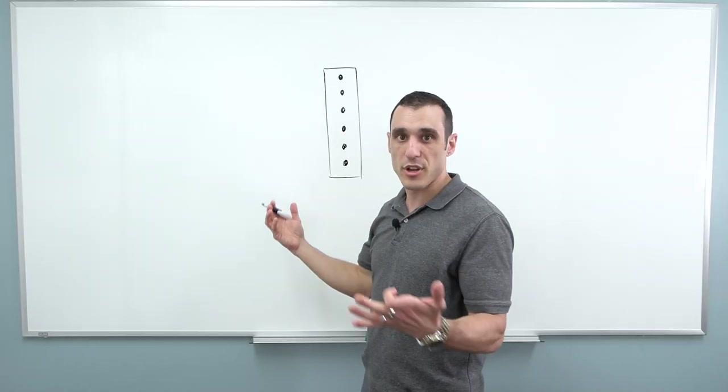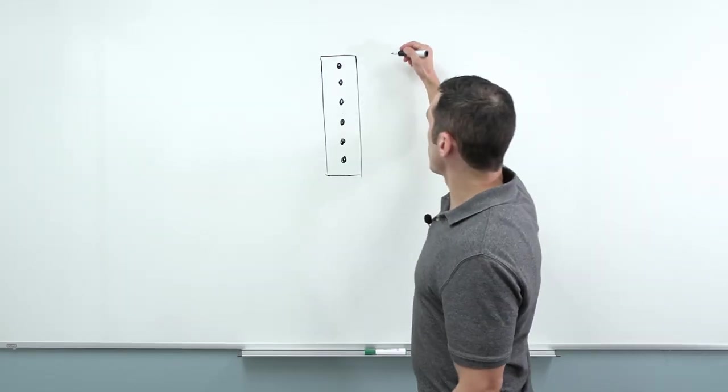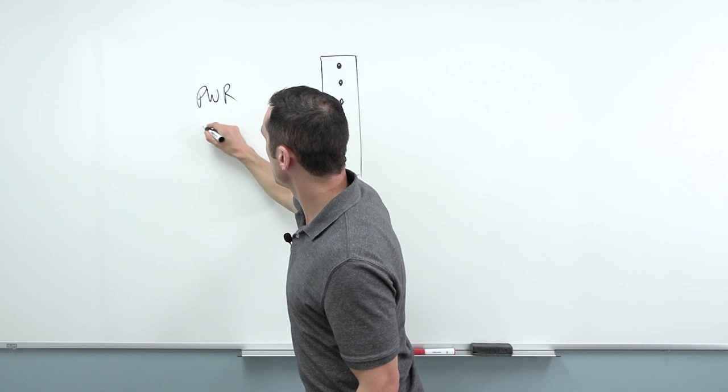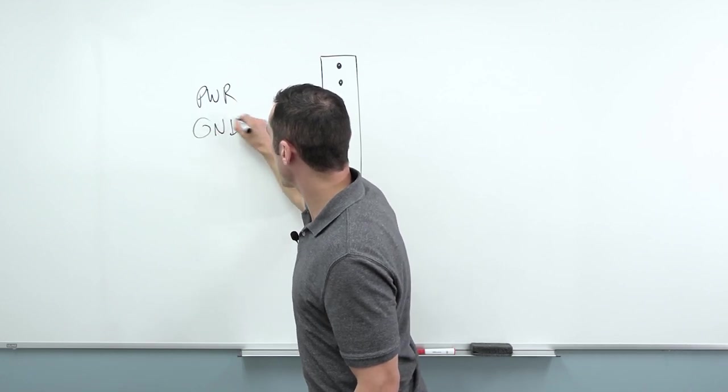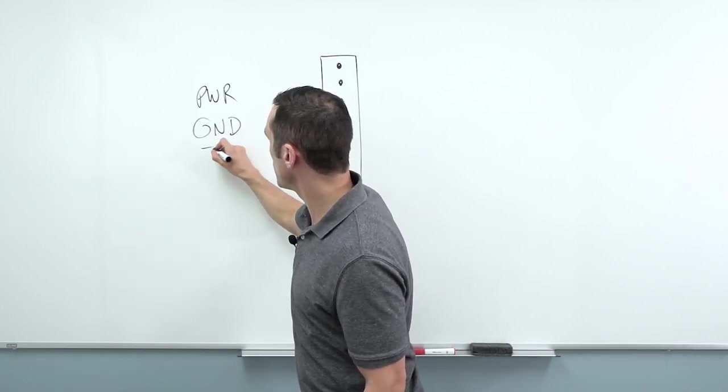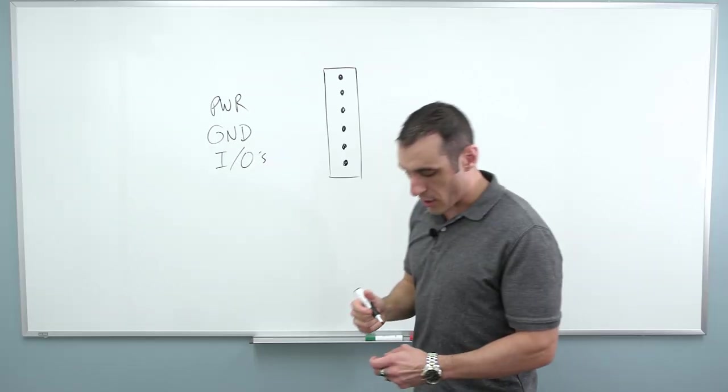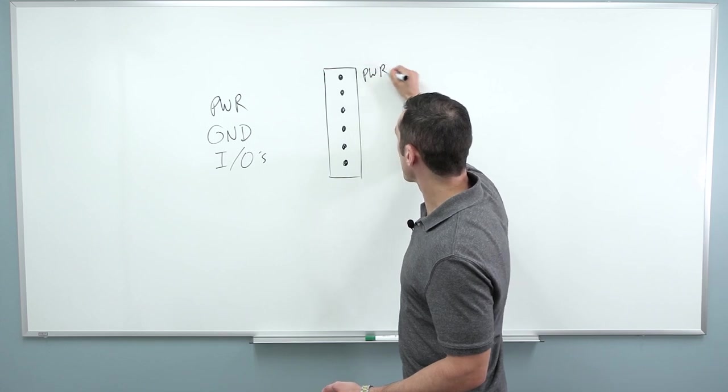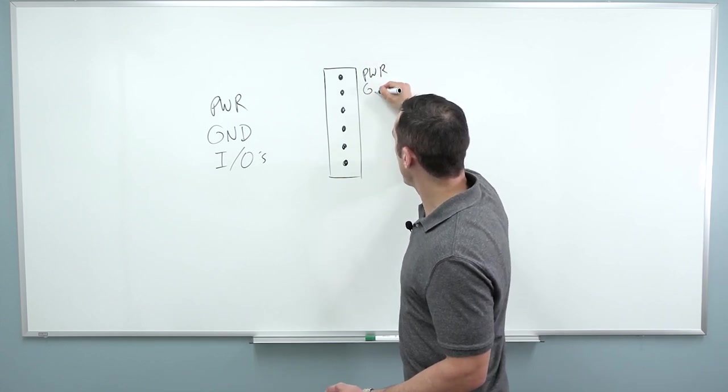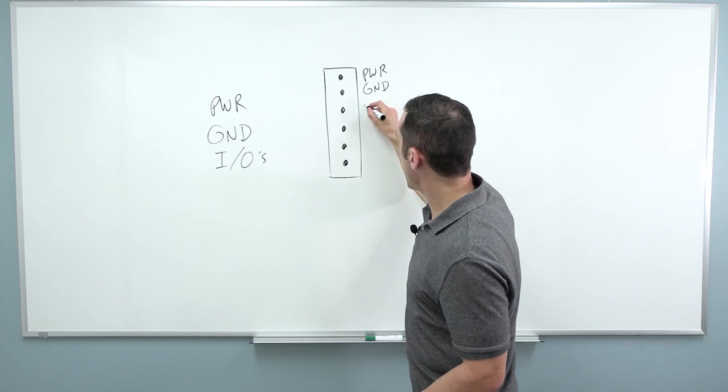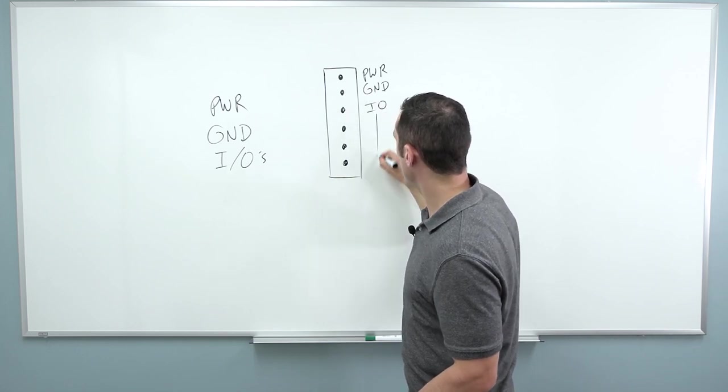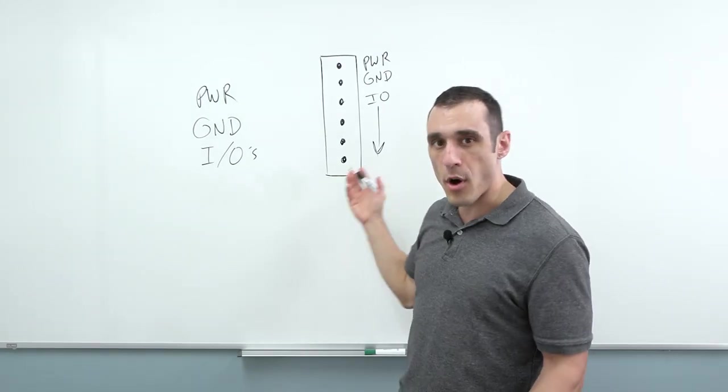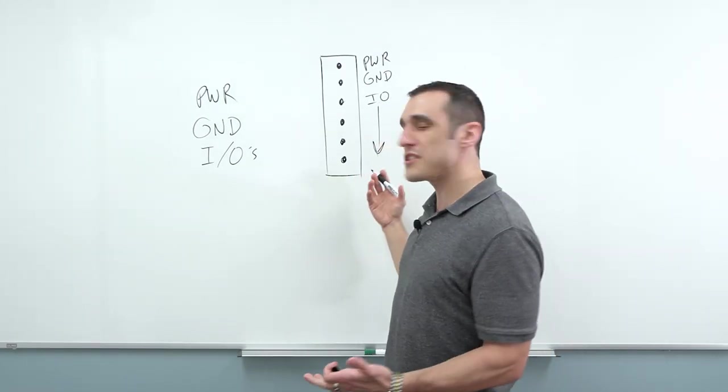Now the question becomes how should we arrange different signals? Let's just say for the moment that we know we have to have power, we need to have a ground connection, and we need to have some IOs. So I think pretty much everybody's intuition is to say, we're going to put power here, we're going to put some ground here, and we're going to do IOs all the way down the rest of the way. So for a small pinout connector, this is usually fine.